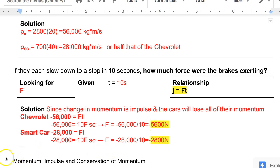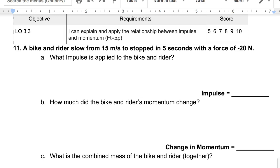Let's take a look at the next problem. Now, we have a bike and a rider slow from 15 meters per second to stopped in five seconds with a force of negative 20 newtons. One thing to note before we start, I think that I intended this to be negative 200 newtons to make the situation more realistic. We'll see at the end why negative 20 newtons isn't the most realistic number to use.